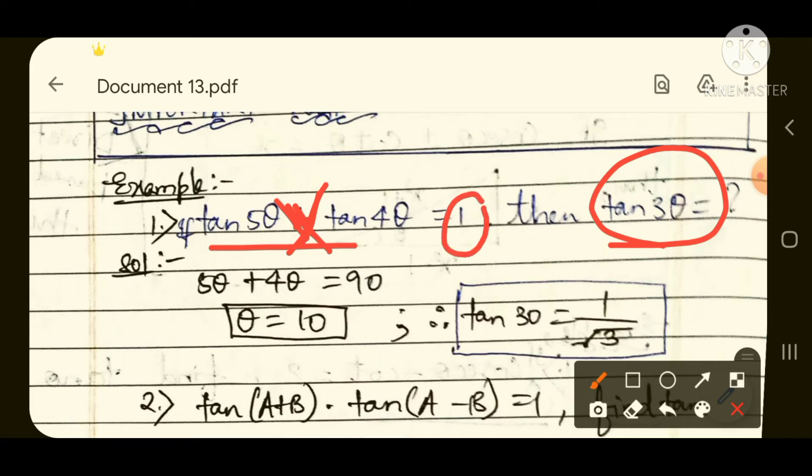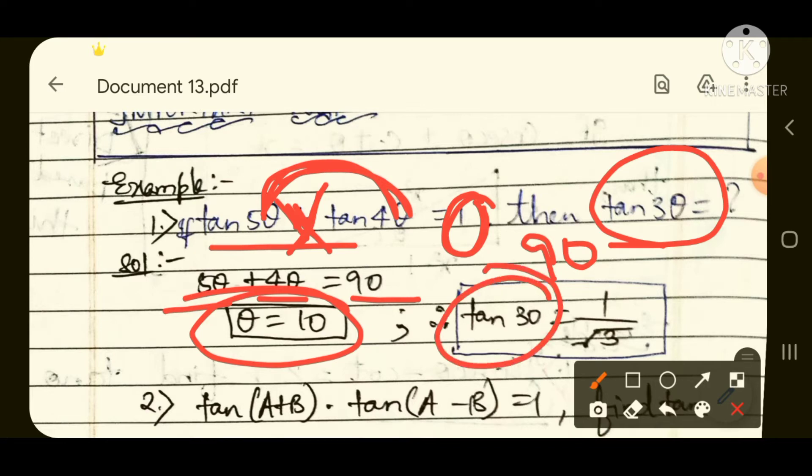So here, see, if they are given that tan 5 theta times tan 4 theta equals 1, then after adding these both angles we will get 90 degrees. So we will add both: 5 theta plus 4 theta equals 90, so 9 theta equals 90, so theta equals 10. And we need to find tan 3 theta.